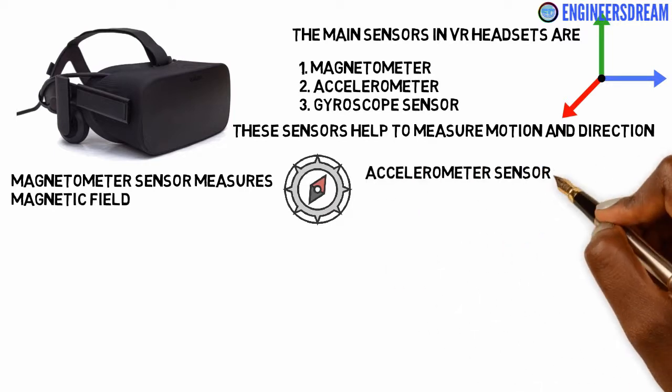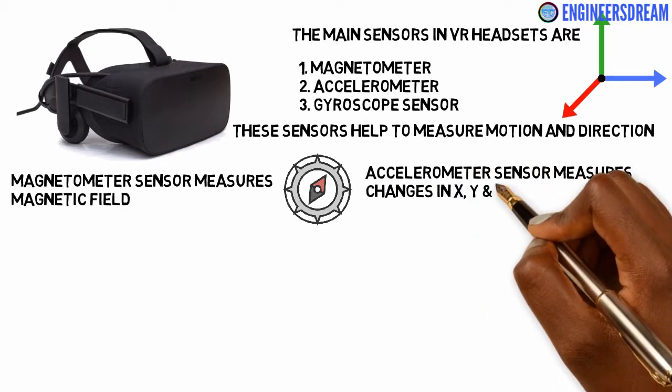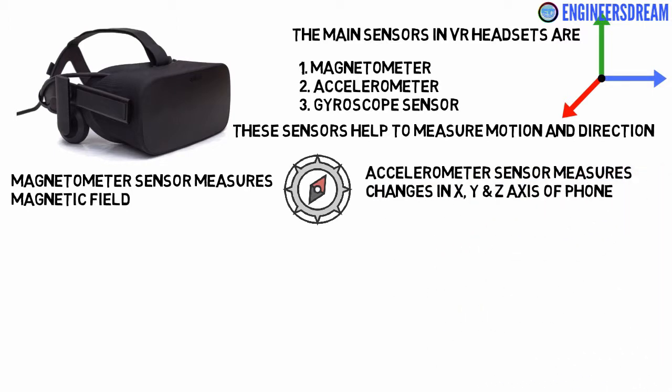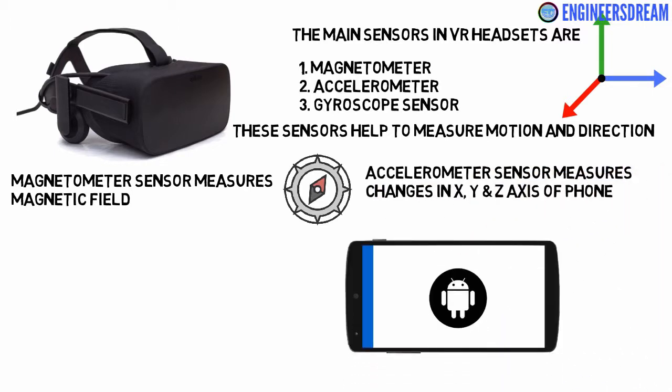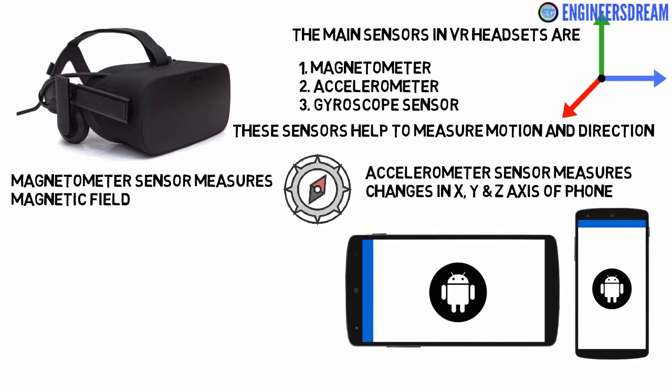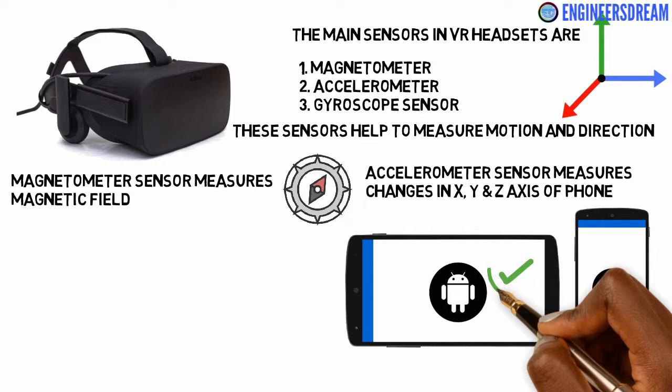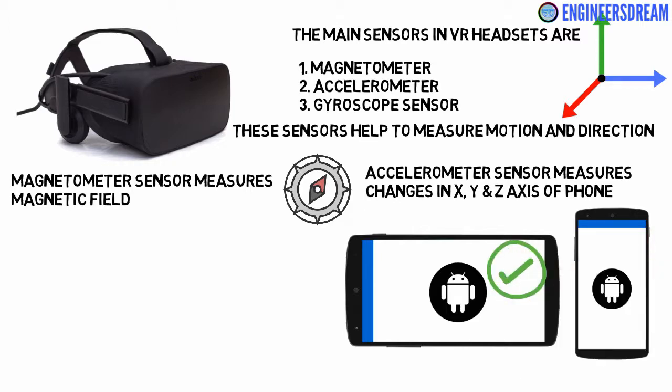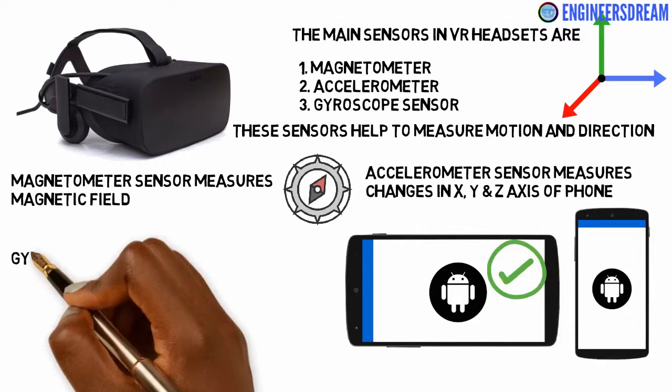An accelerometer sensor measures the change in the X, Y, and Z axis of the smartphone. It is used to detect whether your smartphone is in landscape mode or portrait mode. For experiencing virtual reality, your smartphone should always be in landscape mode.